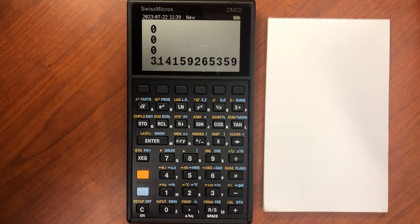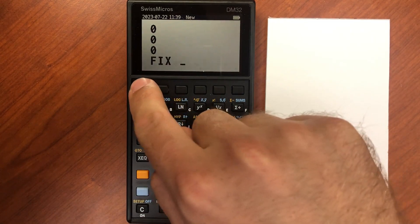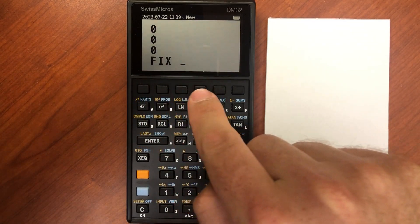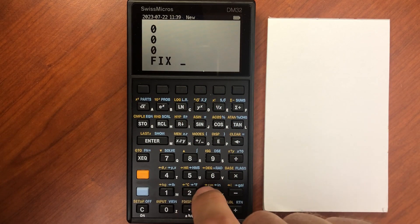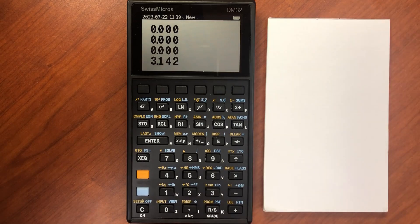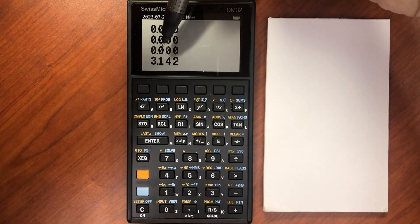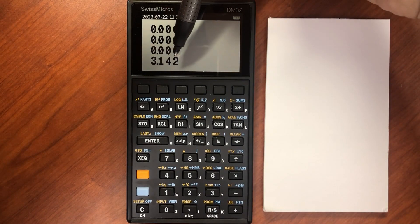If I do something like fixed mode, it will prompt me and ask me how many digits I want to display. So let's display three. Now it will show me the digits of pi up to three digits after the decimal point.